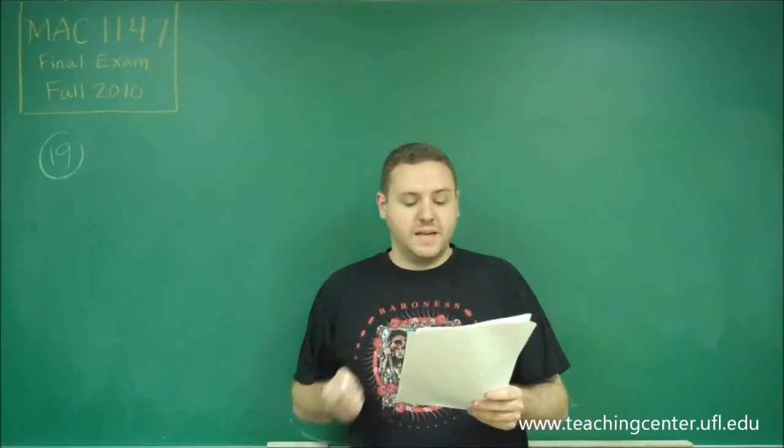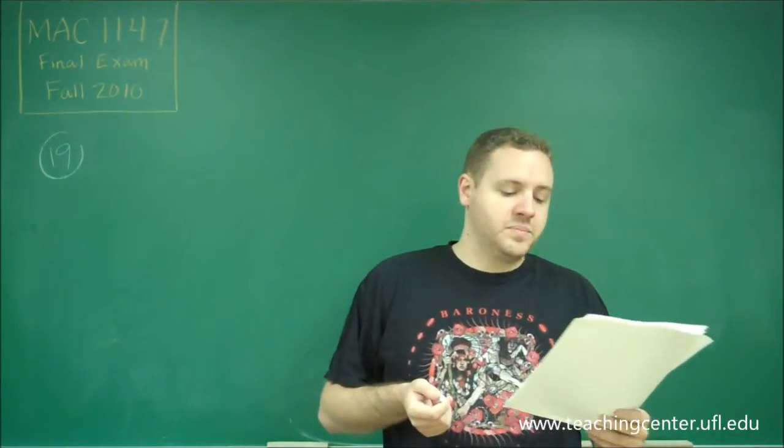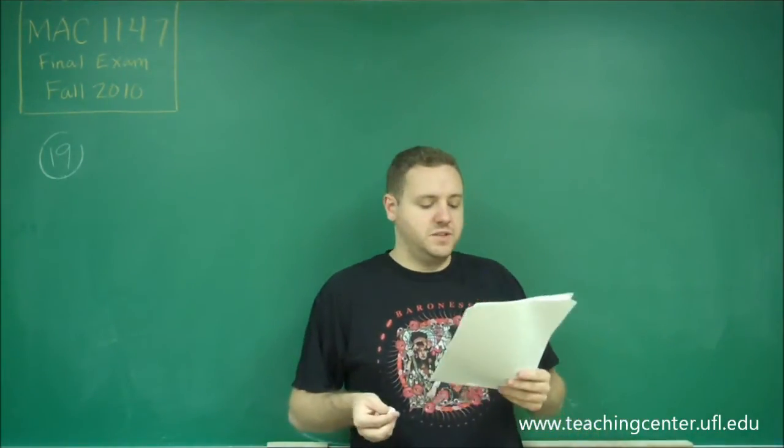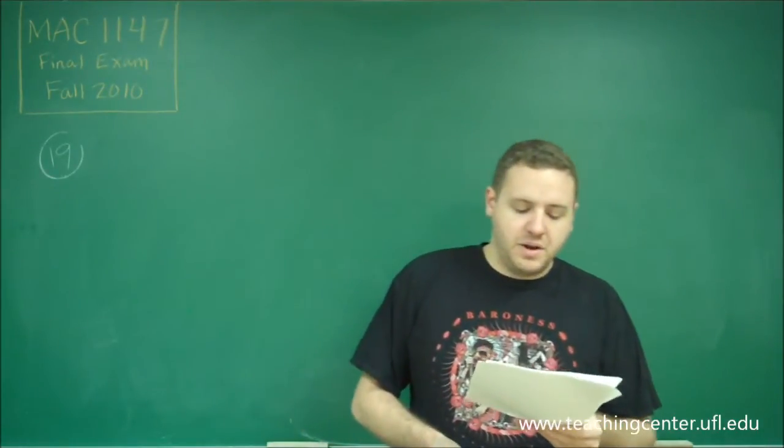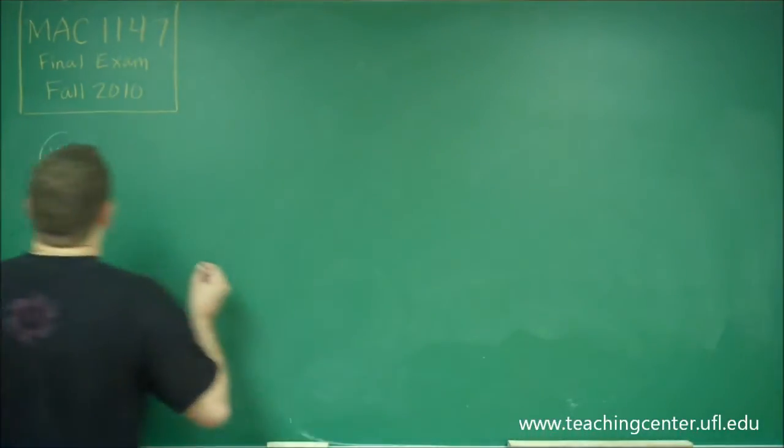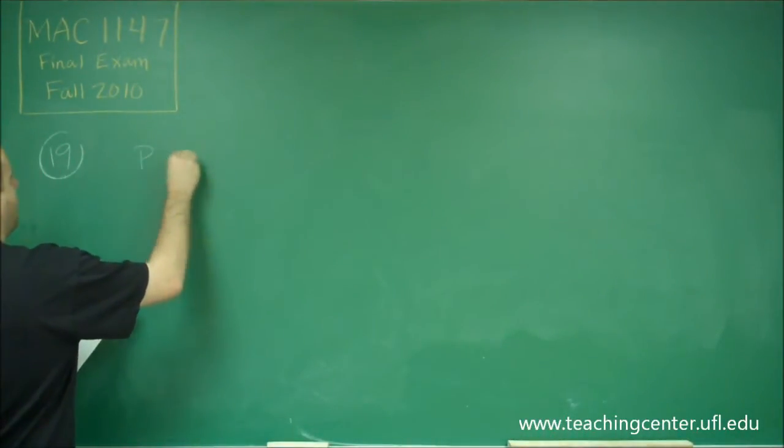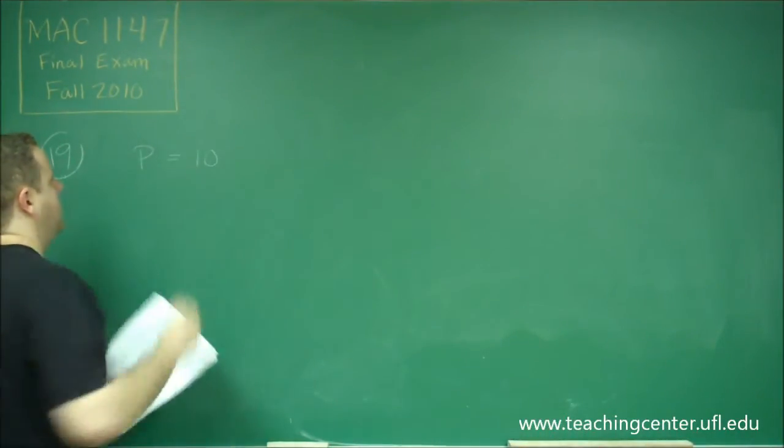Okay, so for number 19 we have an exponential growth problem and we have a couple pieces of information that we need to use. We have an exponential growth of bacteria, and the number of bacteria is 10 in the beginning, so remember that would mean that our principal, our initial amount, is 10.